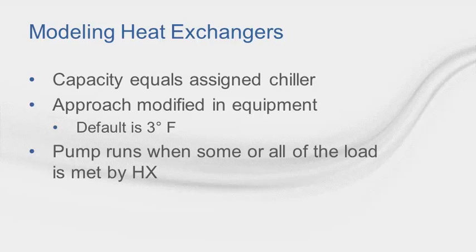A few important things to note about modeling heat exchangers in TRACE 700. TRACE assumes the capacity of the heat exchanger equals that of the chiller to which it is assigned. Heat exchanger approach is modified in the equipment library and then placed in the project via the chiller on which it was configured — the default is 3°F. The free cooling pump runs when some or all of the load is satisfied using free cooling.